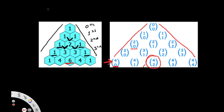We could compute each element using nCr directly — for example, 4C0, 4C1, 4C2, and so on — but that requires a lot of redundant computation. A better solution is to use the value of nC(r−1) to find nCr. Since we know the first element is always 1, we can use each computed element to find the next one.